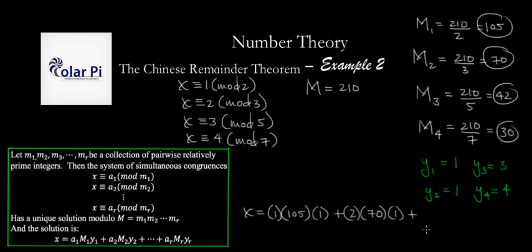A3, which is 3, times M3, which is 42, my favorite number, and then times Y3, which is 3, and then plus, finally, A4, which is 4, times M4, which is 30, and then times Y4, which is 4.